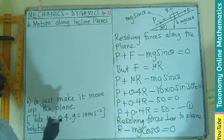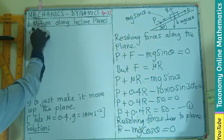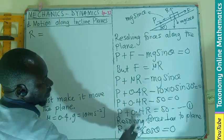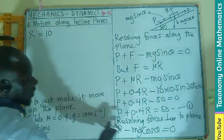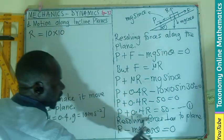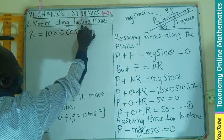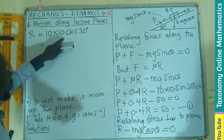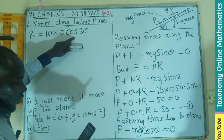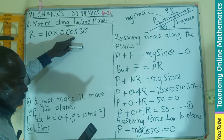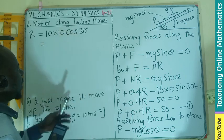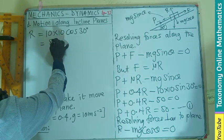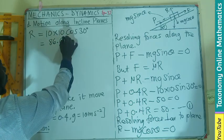So by substitution, R will be equal to the mass of the body. The mass of the body is 10 times gravity times the cos of the angle, which is 30 degrees. I guess you can put all these in our calculator. That will be 86.60. So R is 86.6 newtons.